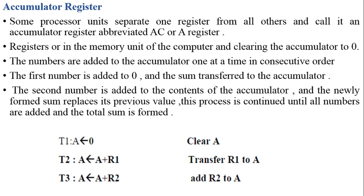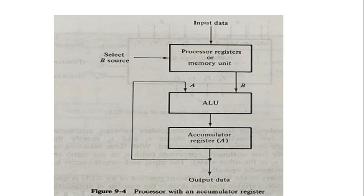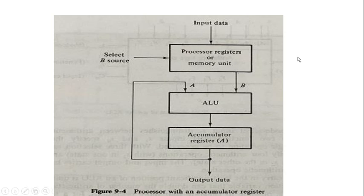This is the diagrammatic representation of an accumulator register in a processor. Here we have processor registers, memory unit, and a separate accumulator register for accumulating the result of addition. The ALU is also shown. Initially the accumulator register is initialized with value 0, which is taken as the A input of the ALU. The B input is taken from other registers or from memory — in a scratchpad memory system or two-port memory system — using a common bus system.